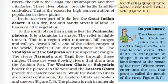The relief of the peninsular plateau is highly uneven, with numerous hills, ranges, and valleys. The Aravalli Hills, one of the oldest mountain ranges of the world, border it on the northwest side. The Vindhya and the Satpura are the important ranges here. The rivers Narmada and Tapi flow through these ranges — they are west-flowing rivers that drain into the Arabian Sea.